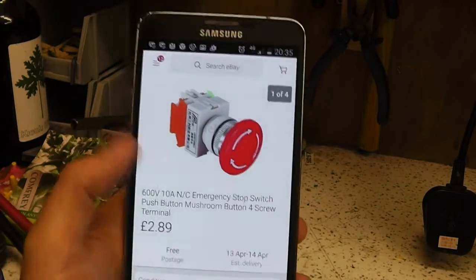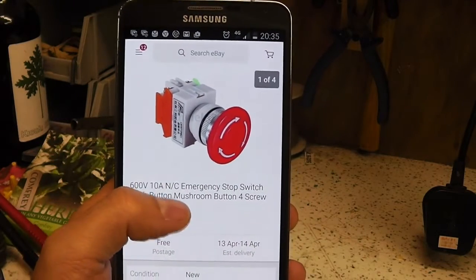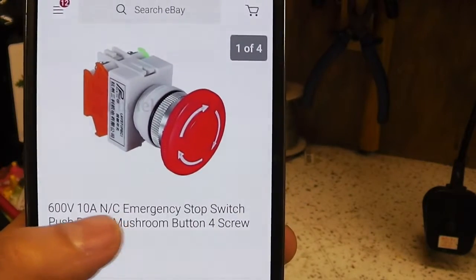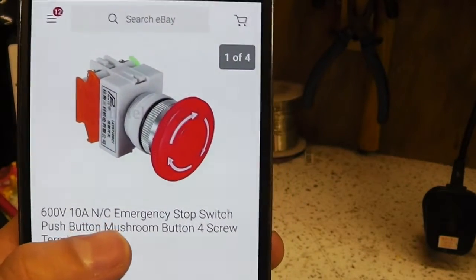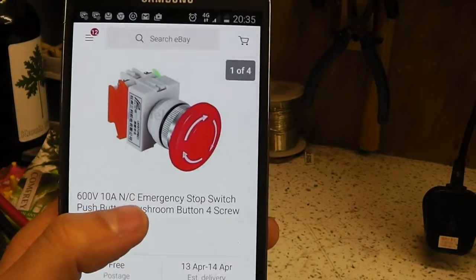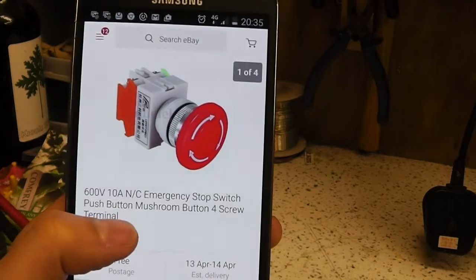So it has two normally closed channels on it. You see on this particular eBay advert it only mentions normally closed. Actually how these things ship is they have one normally closed channel and one normally open channel.